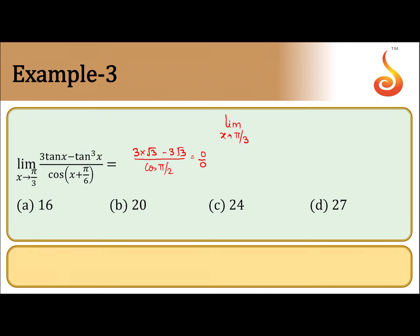Limit extending to π/3, 3 secant square x minus 3 tan square x into derivative tan x is secant square x, divided by minus sine of x plus π/6. Now we put the limit.